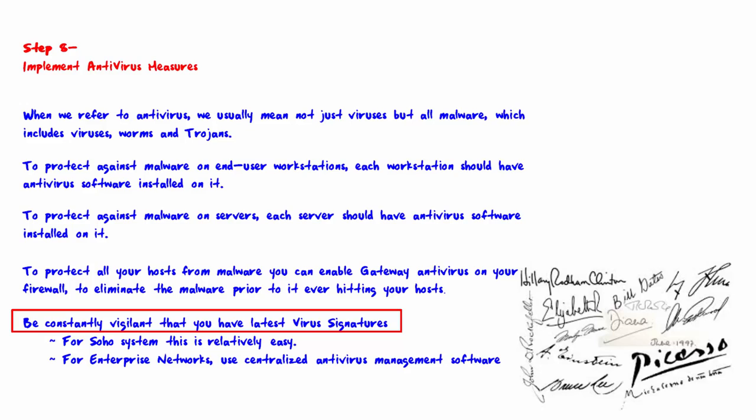For SOHO systems, this is relatively easy — you simply install antivirus software on your PCs. Most antivirus software upgrades its signatures automatically, and if you periodically double-check that the signatures are up to date, then you're probably okay.